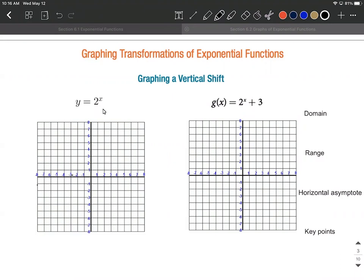So the 2 to the x graph, this has two key points. One's going to be 0, 1. Plug in a 0, 2 to the 0 power is equal to 1. And then if you plug in a 1, we get 1, 2 coming out.